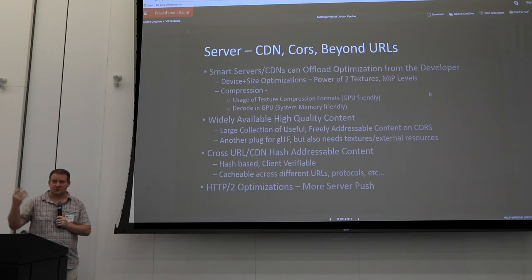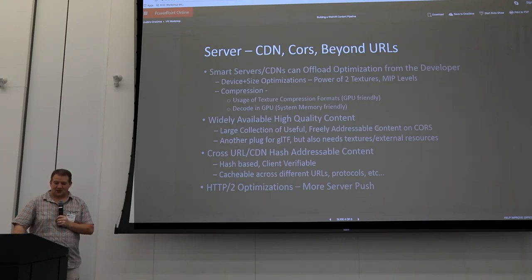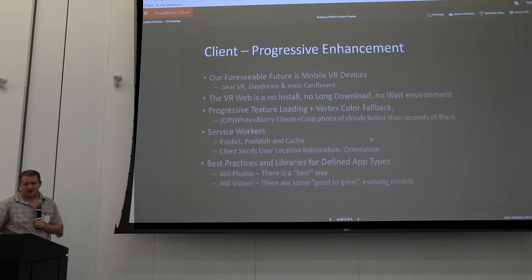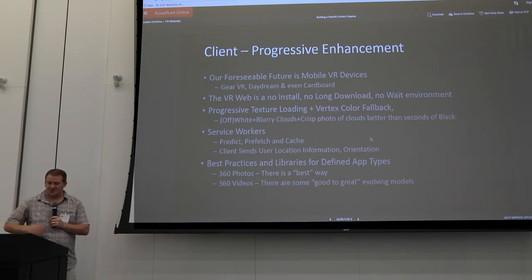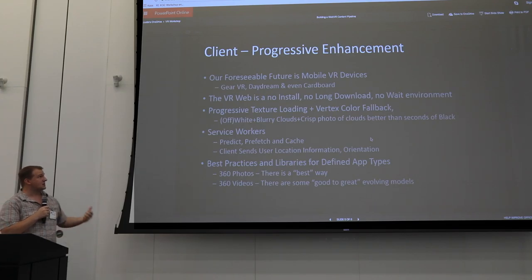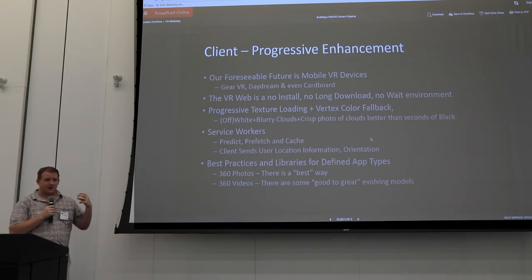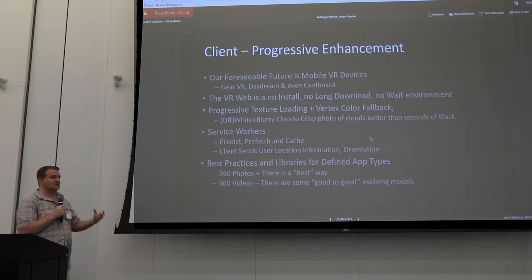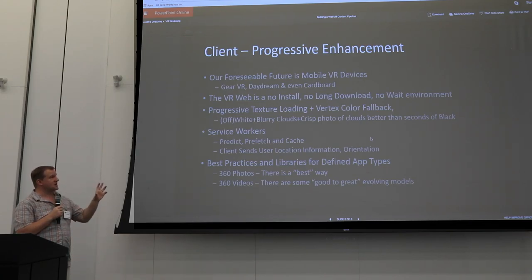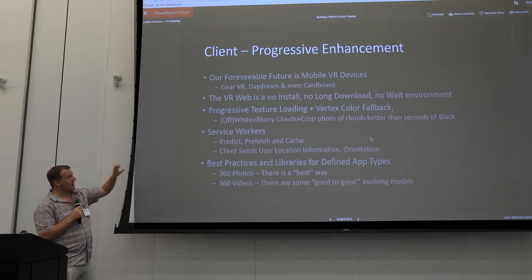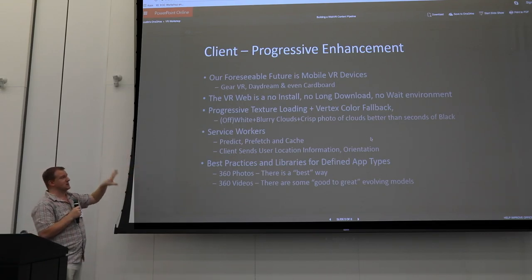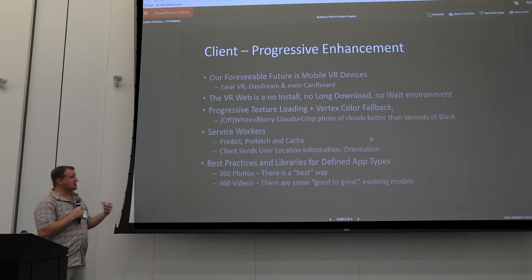A bunch of HTTP/2 optimizations — definitely more server push. A server serving a VR scene could know all of the textures and meshes it needs to push down front; this would be GLTF on the server, perhaps. Then there's client-side progressive enhancement. Our foreseeable future is mobile devices — Gear, Daydream, Cardboard — so we need low-quality textures to import first to get the scene up, then cycle up to higher quality. No install, no long download, no wait. Progressive texture loading with vertex color, then off-white, blurry clouds, then crisp photo clouds — your user will love that over five seconds of black. Service workers can handle predictive pre-fetching and caching, and can also offload some work from the server.